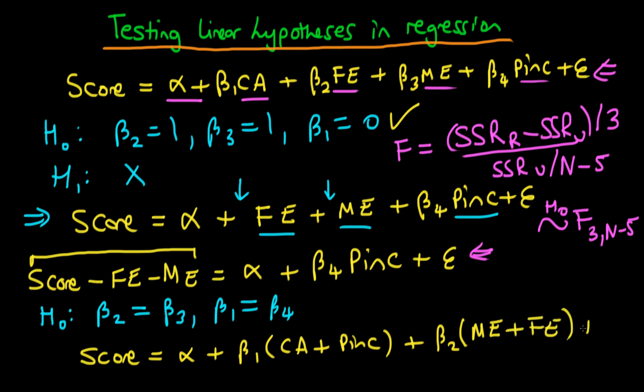Because notice that what we're doing here is we are essentially restricting the effect of both of these two sets of variables to be the same. So the regression which we have here would be a regression of score on the sum of class attendance plus parental income, plus then we would also have the sum of mother's education plus father's education. So then this is just a particular nested form of the original model.